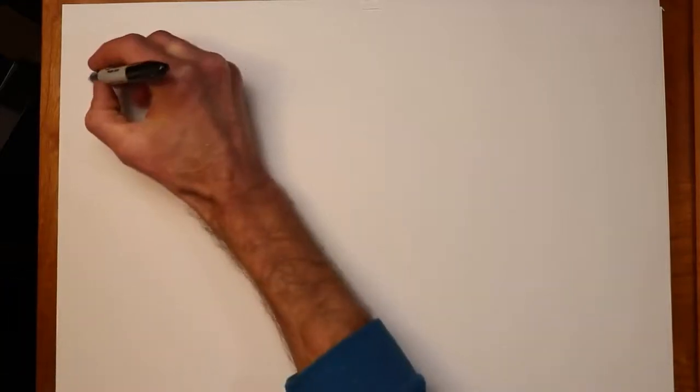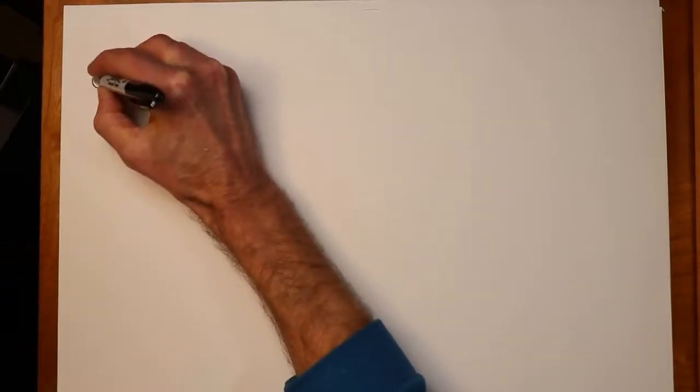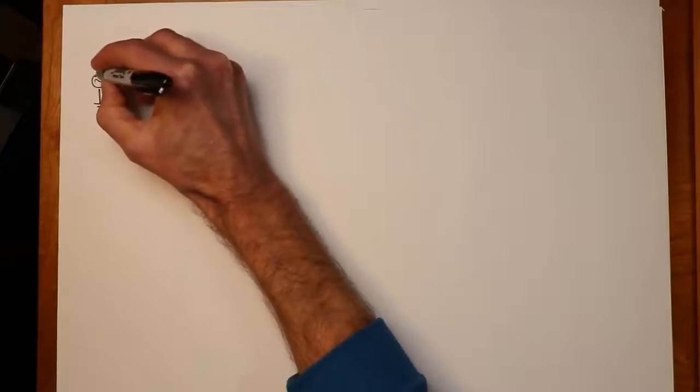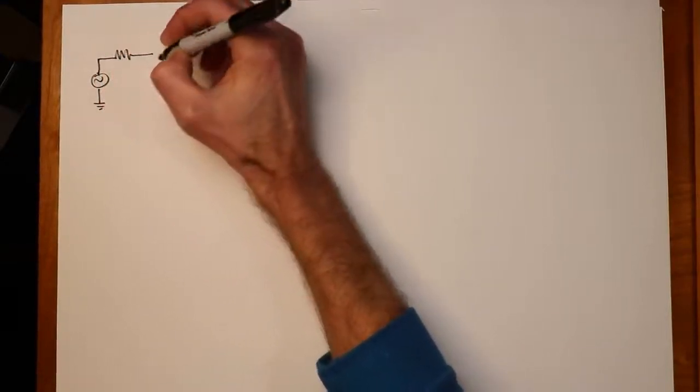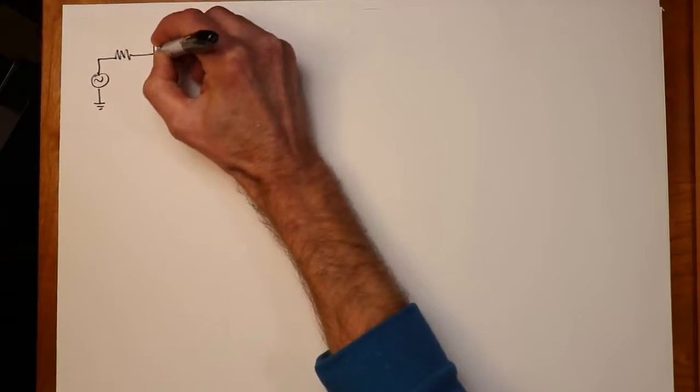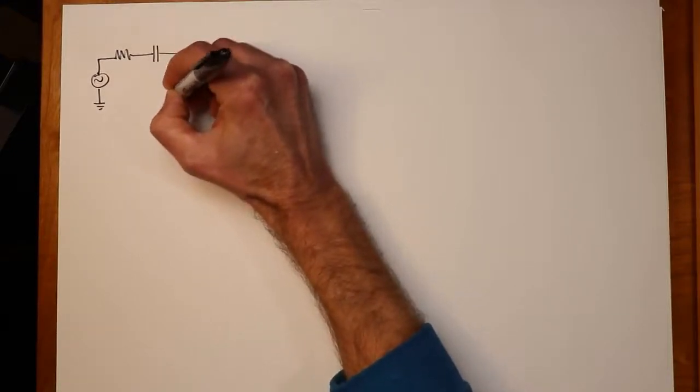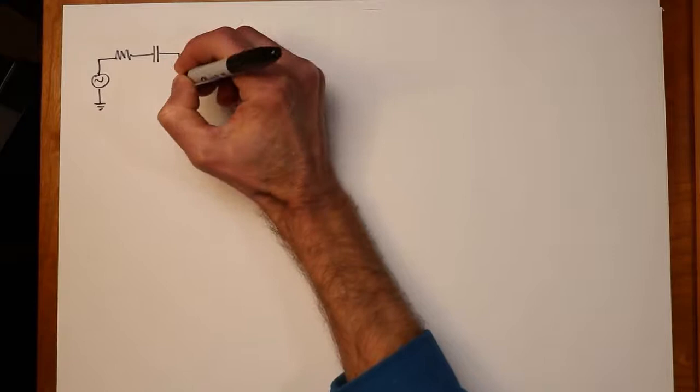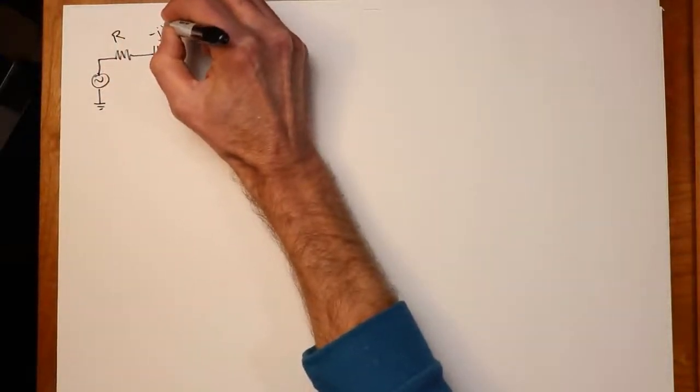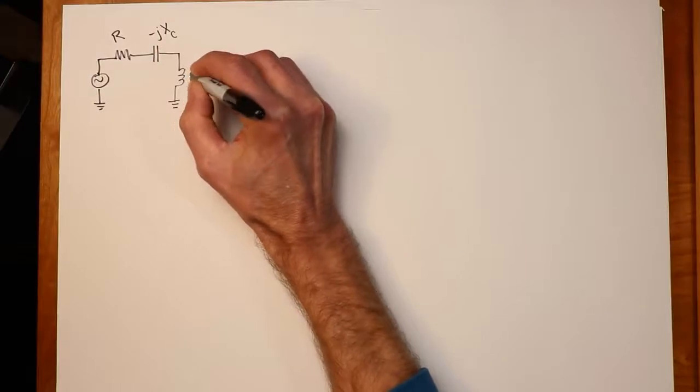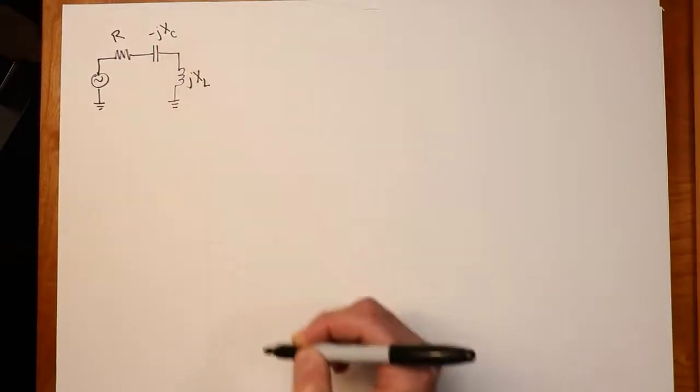So let's take a look at a simple series circuit. We have just a source here, a resistor, capacitor, and an inductor. We've got a resistance here, minus jXc here, and jXl here.